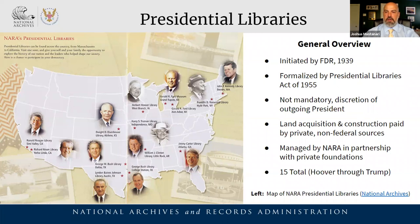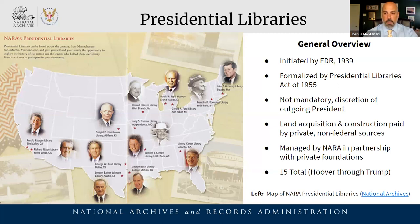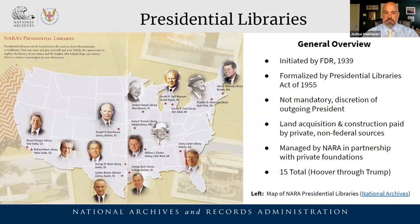Presidential libraries are a wing of the National Archives and Records Administration. They were initiated by FDR back in 1939 and made formal in the mid-50s. Every president doesn't have to have a public-facing institution, but the National Archives must designate a presidential library. Altogether, from Hoover through Trump, we have 15 presidential libraries at some level administered by NARA.